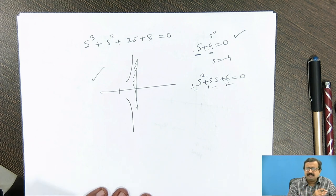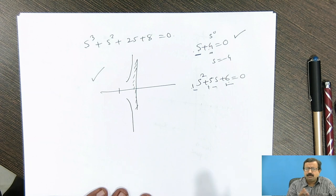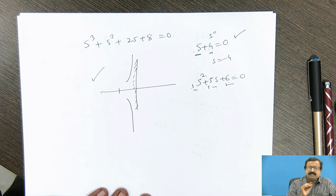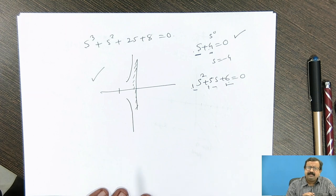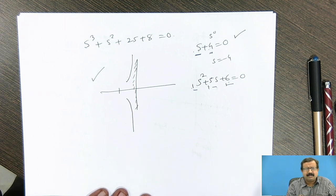To summarize from the last lecture: whenever the system is up to order 2, if it is a complete polynomial — meaning all terms in powers of s are present — and each coefficient has the same sign, either all positive or all minus, then the system is guaranteed to be stable.